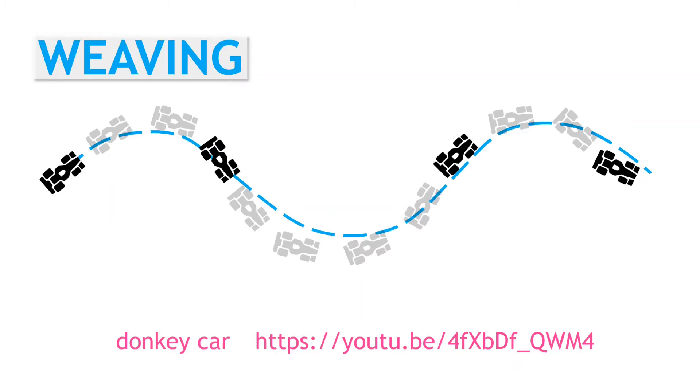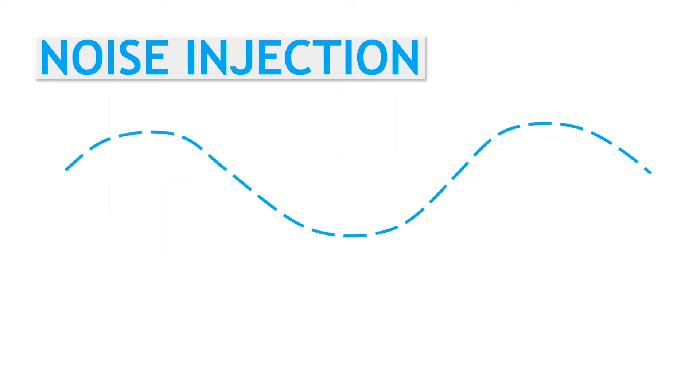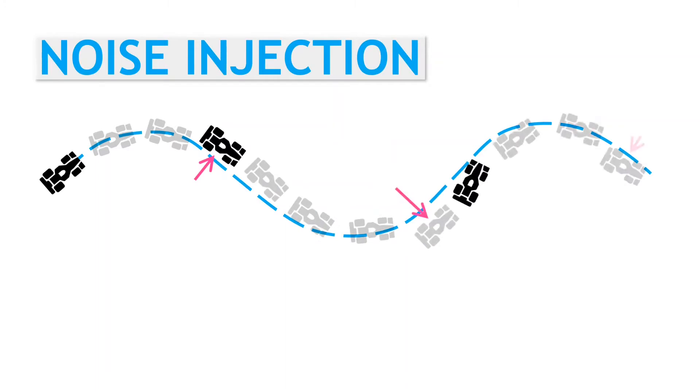The second behavior cloning tweak follows the same basic idea, to try and expand the range of the training data collected. By randomly injecting noise into the steering during training, the expert driver gets knocked off the ideal driving line. This gives us the expanded range of camera images and also captures the driver's actions needed to return the vehicle back to the normal driving line.